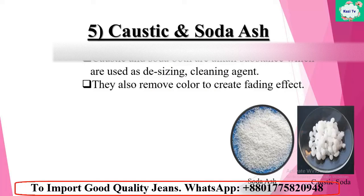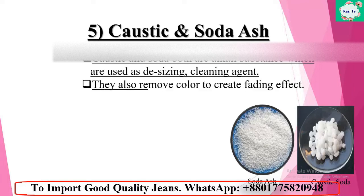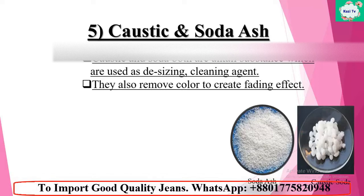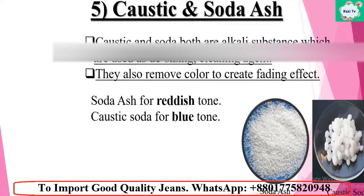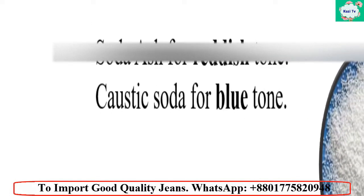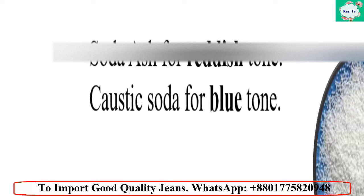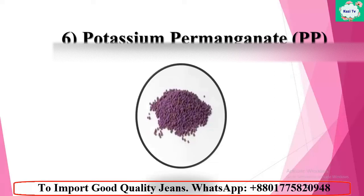Number five: caustic soda and soda ash. Both caustic soda and soda ash are alkali substances used as desizing agents and cleaning agents. They also remove color to create a fading effect. Both have the same function, but the difference is: soda ash is used to achieve a red tone, and caustic soda is used for a blue tone.